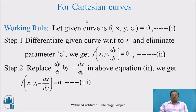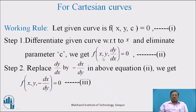In this session, we are finding orthogonal trajectories for Cartesian curves. Working rule: let the given equation of the curve be f(x, y, c) = 0 as equation 1, where c is a parameter. In step 1, differentiate equation 1 with respect to x and eliminate parameter c. We get a differential equation f(x, y, dy/dx) = 0, denoted as equation 2. This is the differential equation of the given Cartesian curve.